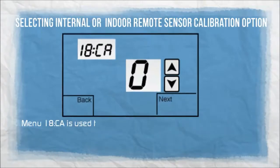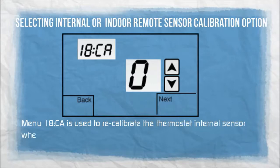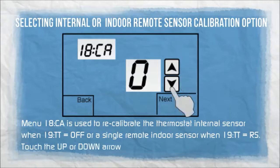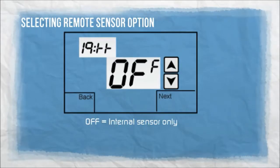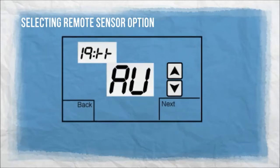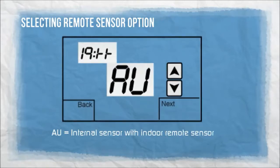Menu 18CA is used to recalibrate the thermostat internal sensor when 19TT equals OFF, or a single remote indoor sensor when 19TT equals RS. Touch the up or down arrows to adjust calibration. Off: internal sensor only. RS: indoor remote sensor only. AU: internal sensor with indoor remote sensor.